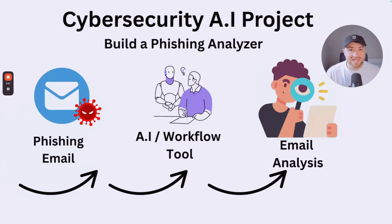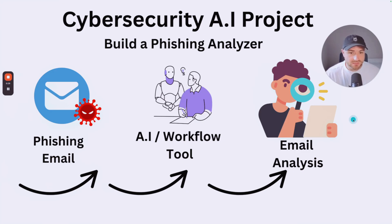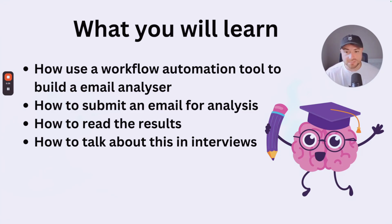Welcome to the next cybersecurity AI project. What we're going to be doing today is building a phishing email analyzer. How this is going to work is that we're going to have our phishing email sent to our AI and workflow automation tool. Once it's sent there, it's going to perform some analysis and ultimately produce an email analysis report telling us more about the email. We'll learn how to use a workflow automation tool to build an email analyzer and how to submit an email for analysis.